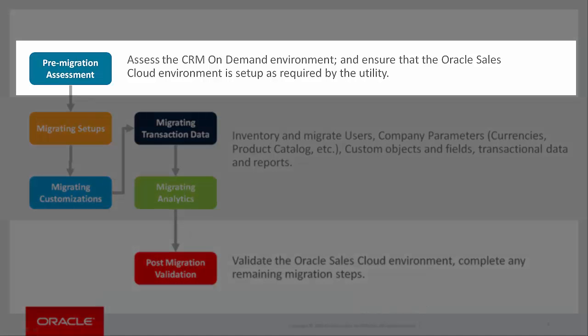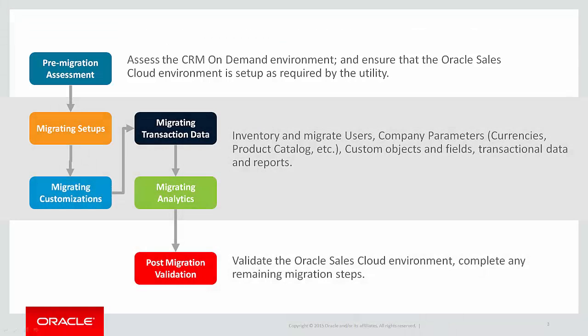At a high level, the utility will first assess the CRM-on-Demand and Sales Cloud environments to ensure that everything is ready to go. In many cases, if things are missing, the utility will take the necessary steps to speed along the migration process and create these values. This includes information such as business units, HCM information, and other company profile data.